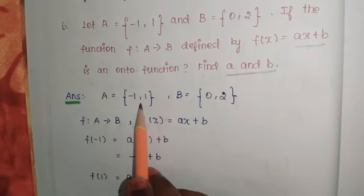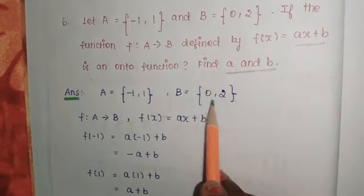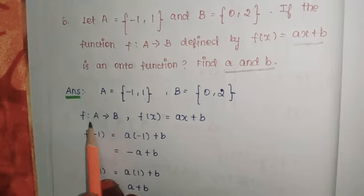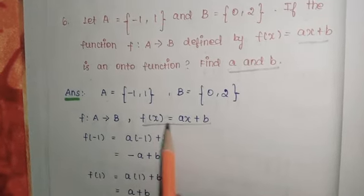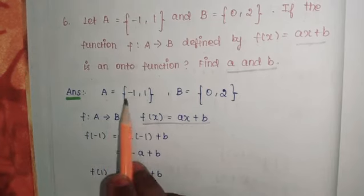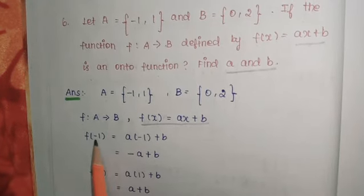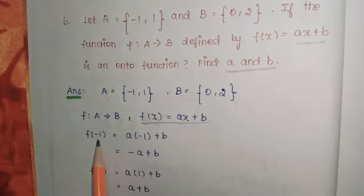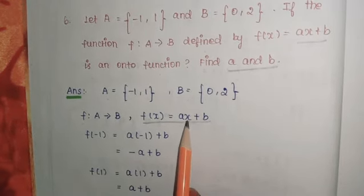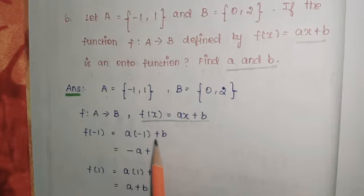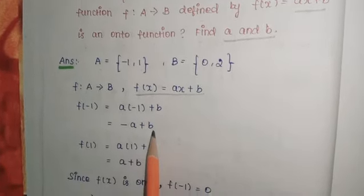A = {-1, 1}, B = {0, 2}, f: A → B, f(x) = ax + b. Now take the value -1 from A and substitute it. f(-1) = a(-1) + b = -a + b.